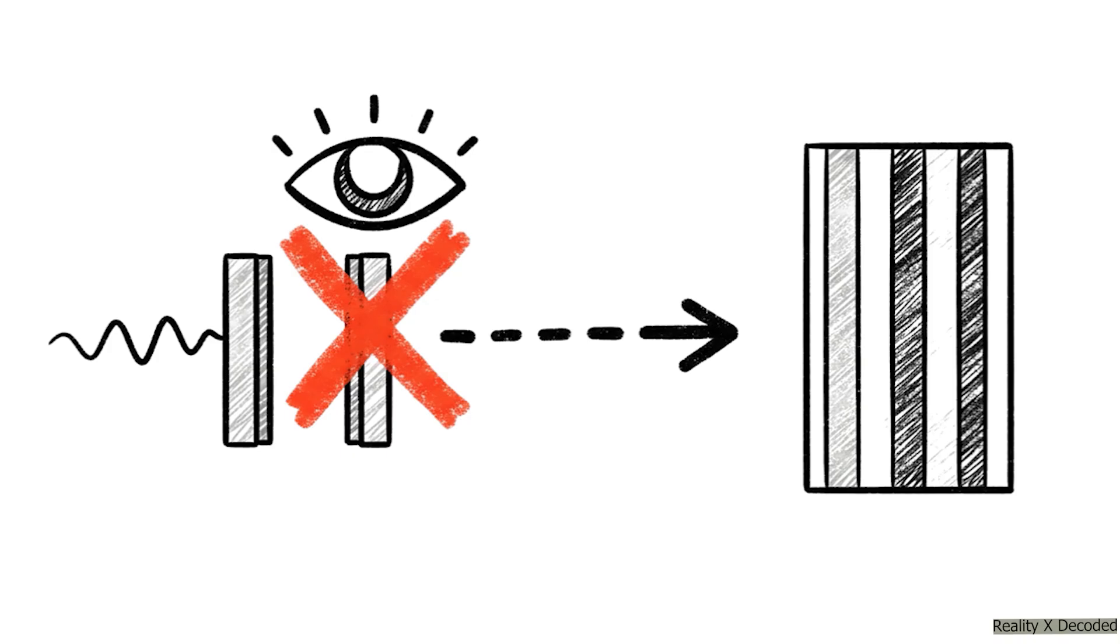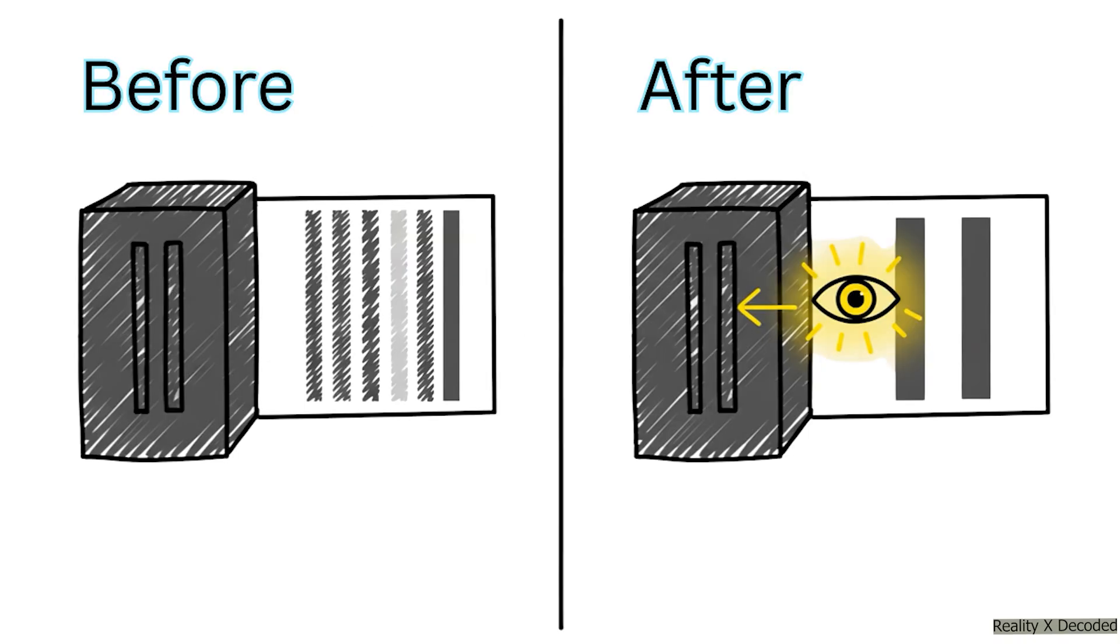And now for the bombshell, the absolute mind-bending twist. The second you turn that detector on, the instant you measure which slit the electron goes through, the interference pattern completely vanishes. Poof. It's gone.